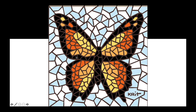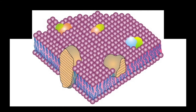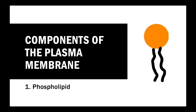Here is an example of a mosaic. You can see a pattern of a butterfly, but the pattern is made up from the arrangement of tiles of different shapes and sizes. This is just like how differently sized proteins scattered around in the phospholipid bilayer, giving it a mosaic appearance. There are four components of the plasma membrane.